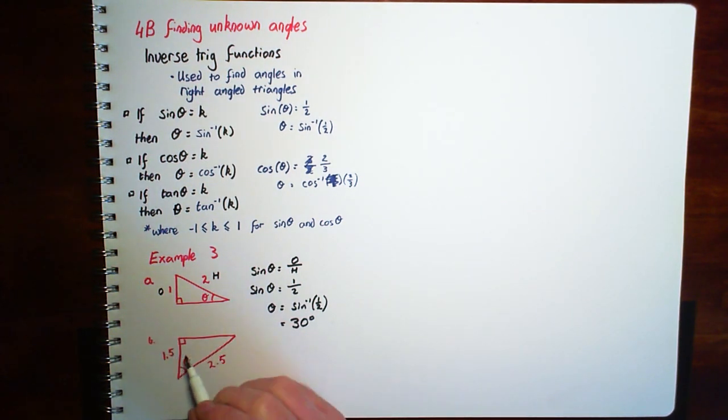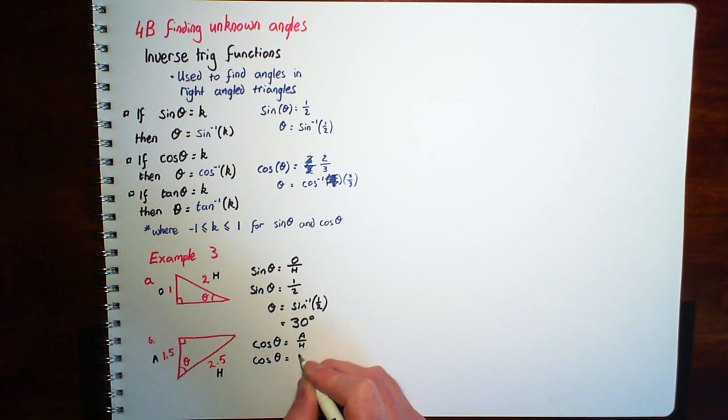Again, we've got a right angle triangle. Label your sides. So theta is here. We've got H and adjacent is the 1.5. So the trig ratio that uses A and H, we're looking for cos. Cos theta equals A over H. We don't know what theta is. So leave it as theta and A is 1.5, H is 2.5.